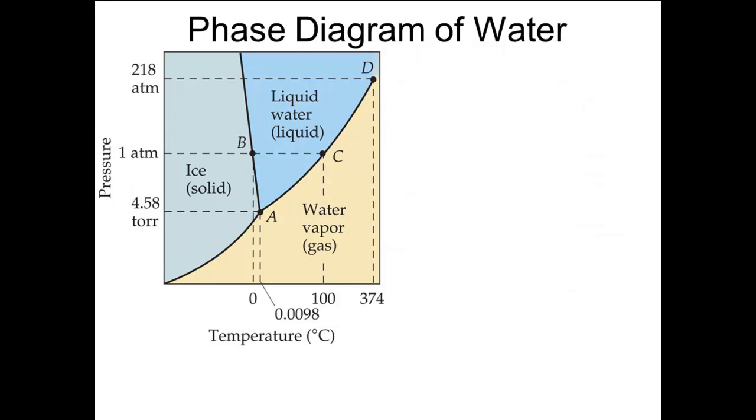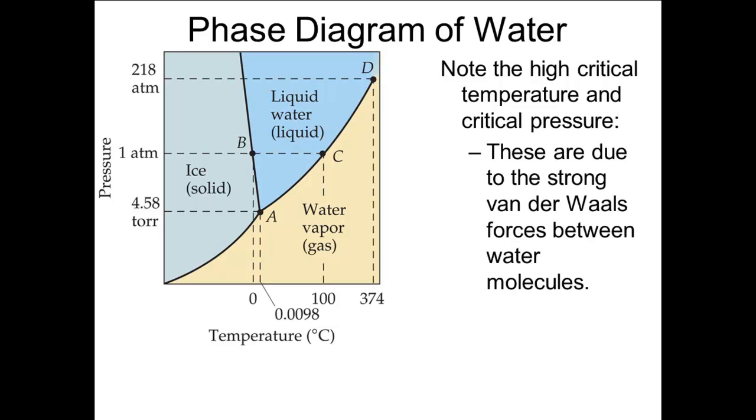The phase diagram for water is shown. Note that the phase diagram is not drawn to scale on either axis. This is generally the case for phase diagrams, particularly because the slope of the melting point line is often obscured if the diagram is drawn to scale. You should note the values of the critical temperature and critical pressure. These are high values and are due to the strong van der Waals forces in the water molecule. It is a general principle that the stronger the intermolecular forces, the higher the critical point of the substance.